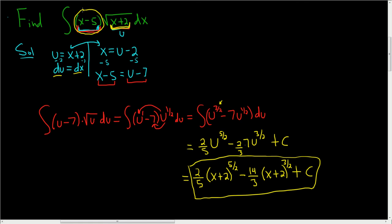And that needs to be in terms of u. What we did was take this equation here and solve it for x. We subtracted 2 from both sides. And we got x equals u minus 2. We wanted x minus 5. So we subtracted 5. So we got x minus 5 equals u minus 7.